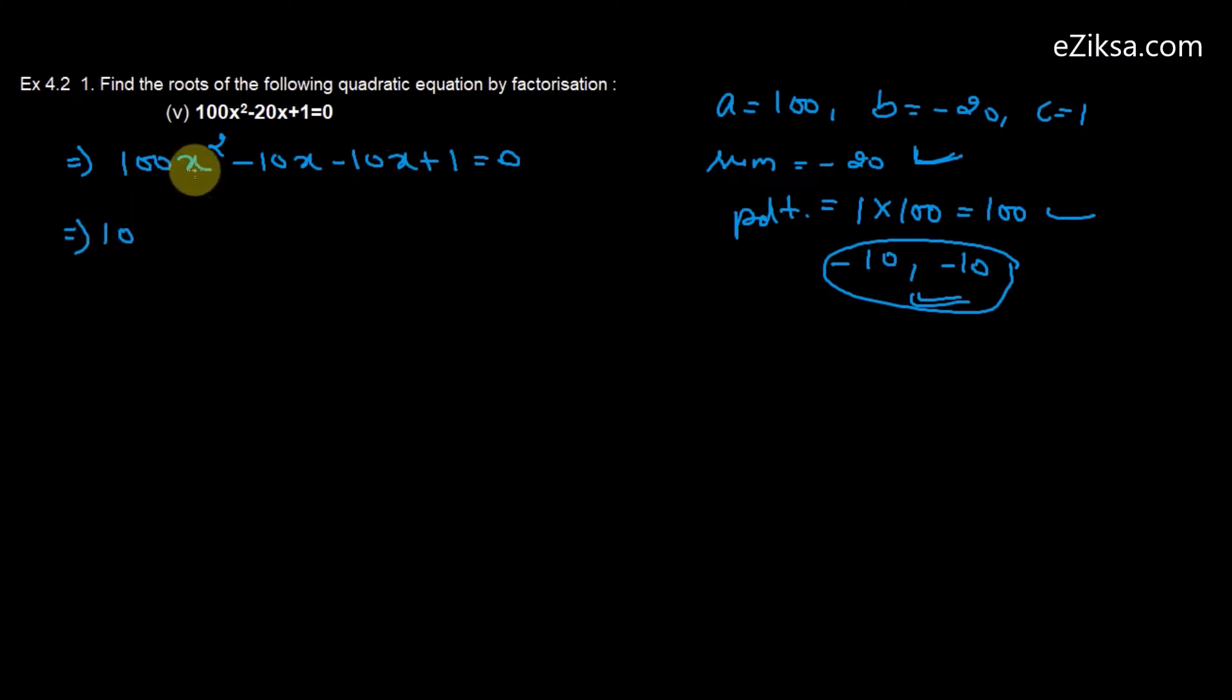Taking x common from the first two terms: 10x(10x - 1). Taking -1 common from the last two terms: -1(10x - 1), which equals 0.